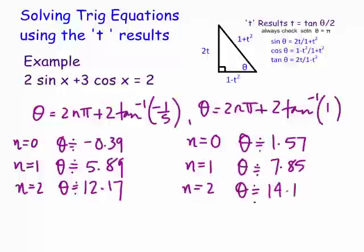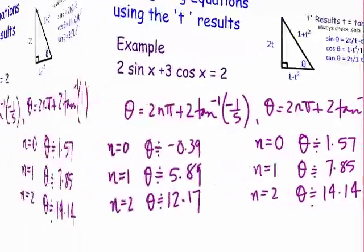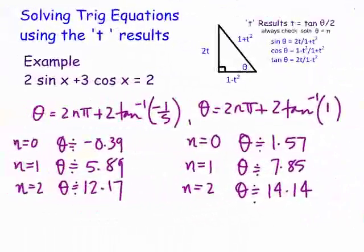It is possible sometimes to combine these two general solutions into one, but in this case it's going to be very difficult, so we'll keep the two streams giving two sets of individual solutions. To finish up, we now check whether x = π is actually a solution to this particular equation.